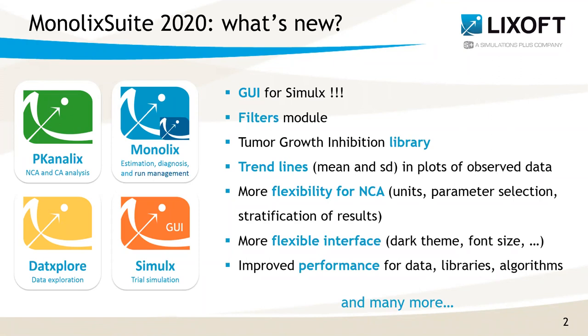In addition to this, we have a module to filter the data prior to analysis, a new library of tumor growth inhibition models, trend lines — the possibility to have trend lines displayed on plots of the observed data with the mean curve and standard deviations, more flexibility for non-compartmental analysis. In particular, the possibility to manage units in the data, to select parameters to compute and to stratify the results, a more flexible interface with a dark theme, the possibility to change the font size, and also improved performances for data libraries and algorithm, and many more.